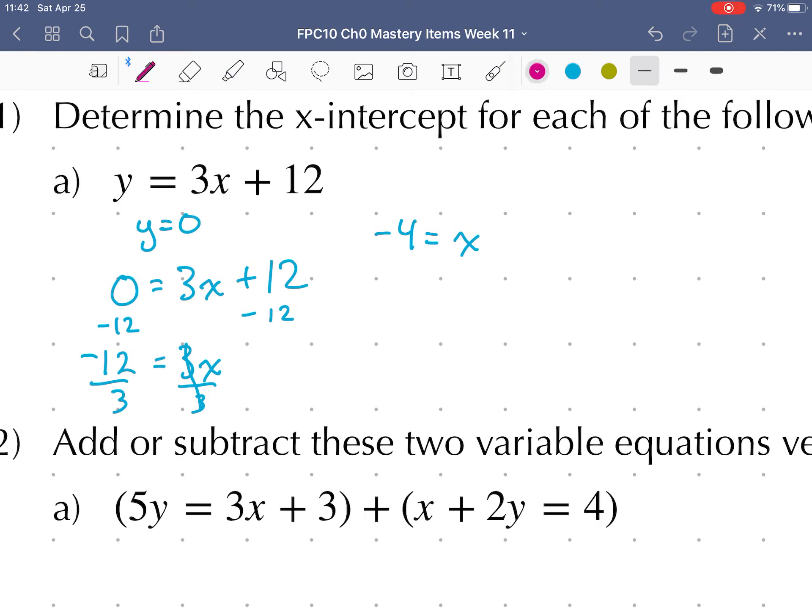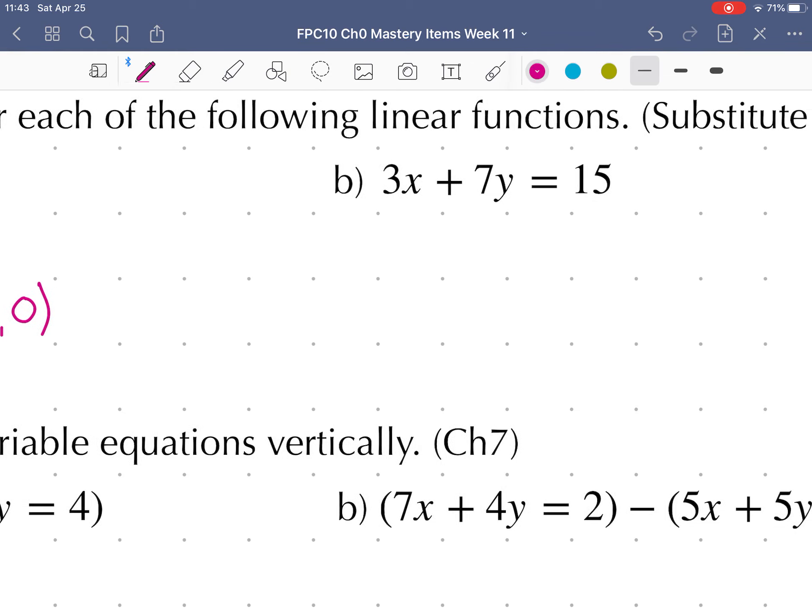Therefore, our x-intercept is at the point minus 4 on the x and 0 on the y, which if we drew a graph would be somewhere over here. That would be our x-intercept.